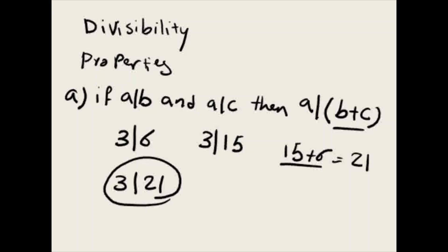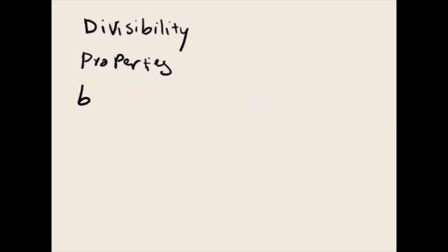For our second property, we're going to say if A divides B, then A divides B multiplied by C. Our C has to be an integer.